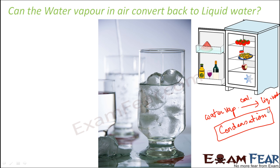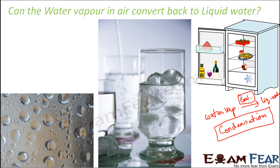In this case, you have water vapor in the surrounding air. Those water vapor, due to this cold temperature, get cooled and get converted to liquid water, which is seen as droplets on the outer surface of the glass. This experiment proves that it is possible to convert water vapor in the air into liquid water — and how? By cooling. These droplets of water were a result of condensation.